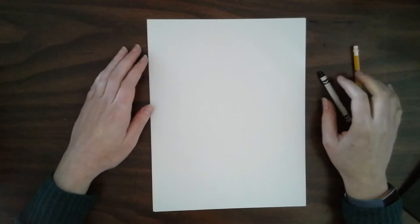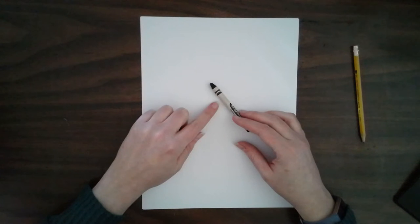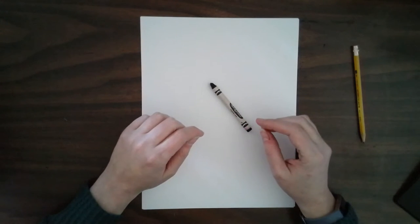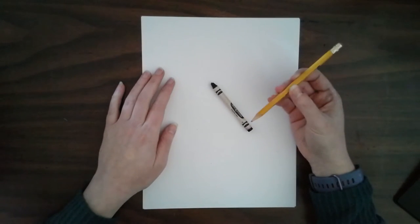Hello artists. Today we're talking about value, and value is the lightness or darkness of a color. So today to do our value drawing, you need to get a piece of paper and then either a black crayon or a black colored pencil, or if you don't have any of those, you can just use a regular pencil.